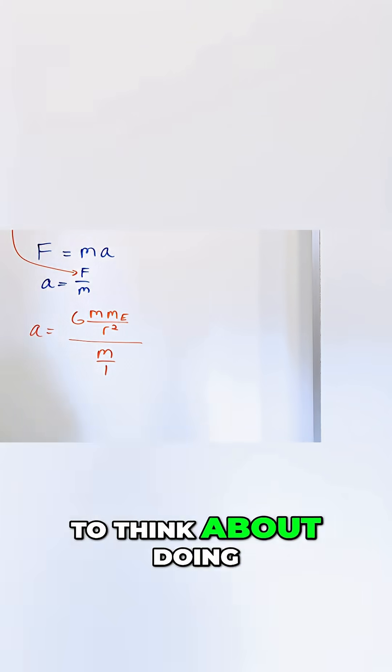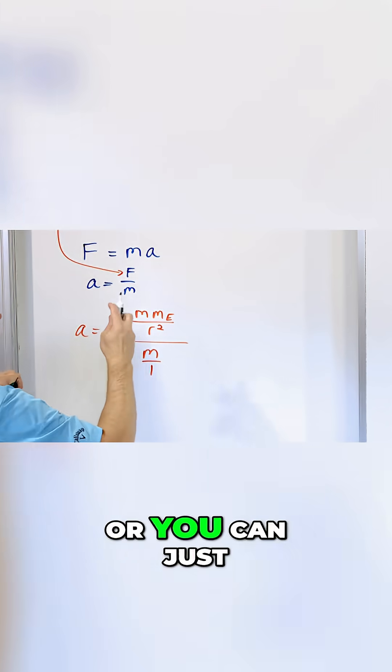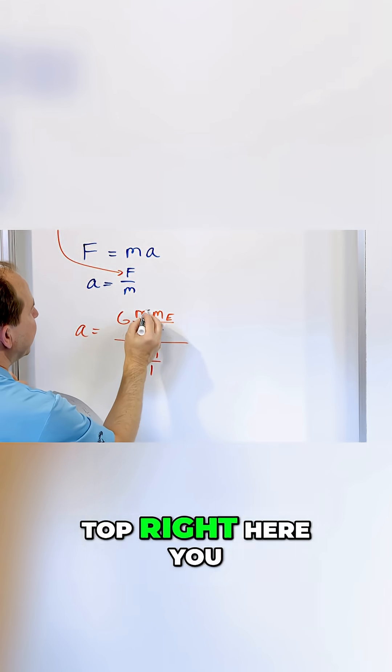However you want to think about doing your algebra, flip and multiply puts the masses on the bottom, or you can just think of it - since they're both on the top right here - you can think of cancel, cancel, right?